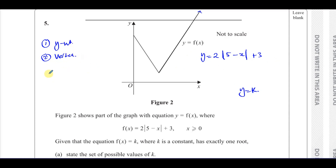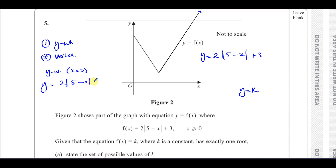So we need to find two things: the y-intercept of our modulus function, and the vertex. The y-intercept is pretty easy — we know that's when x equals 0. So we take our equation: y equals 2 times the modulus of (5 minus 0) plus 3. That gives you 2 times 5, which is 10, plus 3, which is 13. So y equals 13 at the y-intercept.